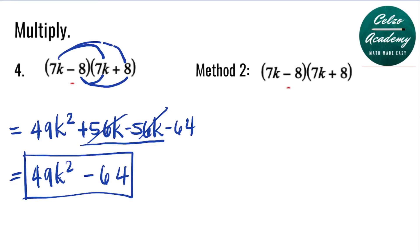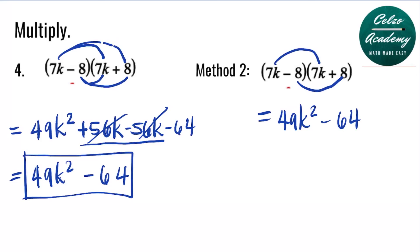Did you notice anything with question number 4? The two binomials are sum and difference, and there is a shortcut for a product of sum and difference. All you need to do is multiply the first terms — 7k and 7k — that's 49k squared. Then multiply the last terms — negative 8 and positive 8 — which is negative 64. The outside terms 56k and inside terms negative 56k cancel to zero. So you simply multiply the first terms and the second terms, giving 49k squared minus 64.